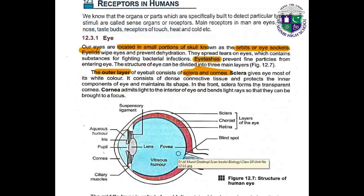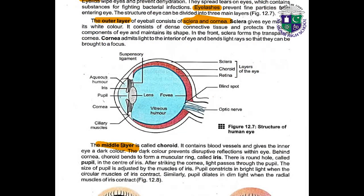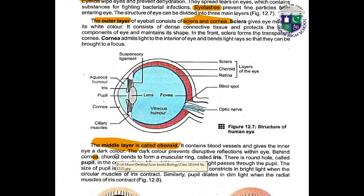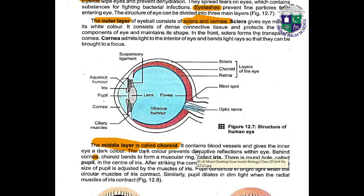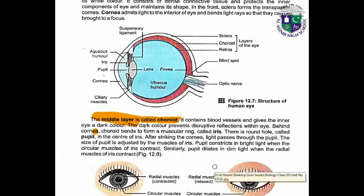Number two is the choroid — the middle layer. It contains blood vessels and gives the inner eye a dark color. The dark color prevents disruptive reflections within the eye.